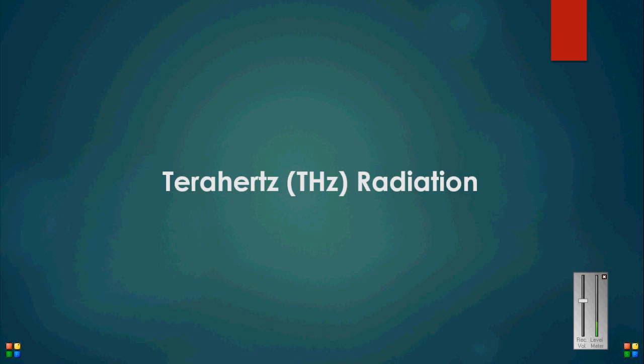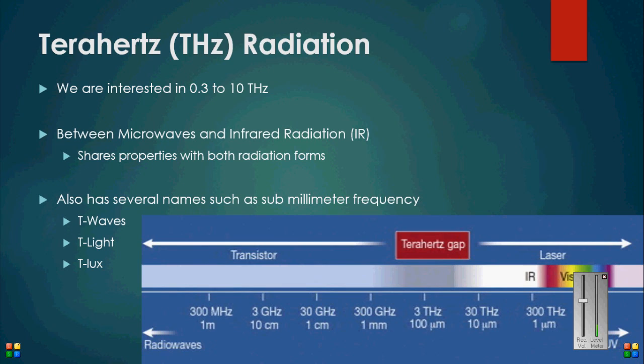The specific region of radiation we are interested in is the frequency of 0.3 to 10 terahertz. On the electromagnetic spectrum, this range lies in between microwave and infrared light, and shares properties of each. Terahertz radiation is also referred to by many other names in different branches of physics.